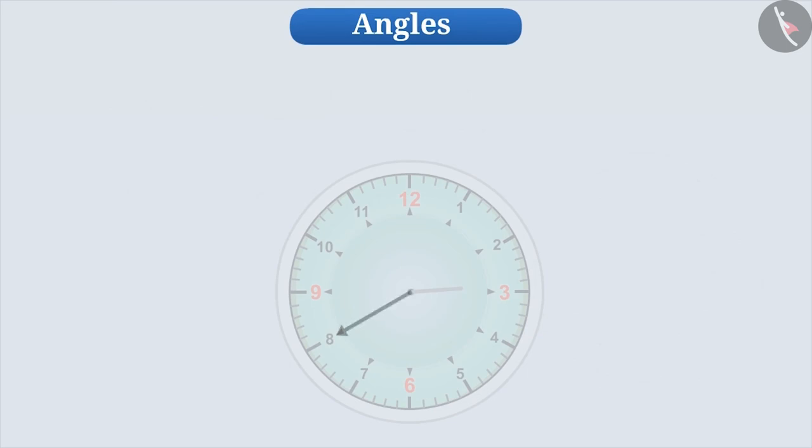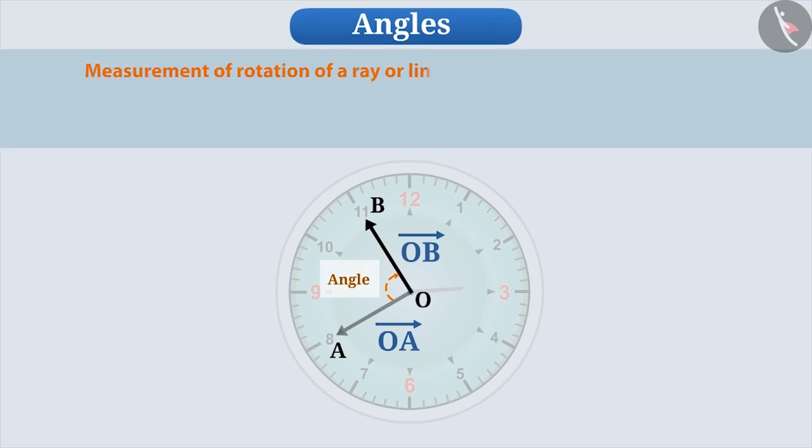If we represent the initial position of the needle with ray OA and the new position after rotation by ray OB, we can say that ray OA has rotated through the angle AOB and has come to the position of ray OB. In this way, the measure of rotation of a ray or line segment is called an angle.